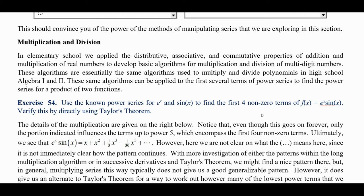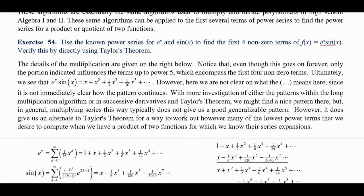These same algorithms can again be applied to find the first several terms of power series for the product of two functions or quotient. So the known power series for e^x and sin(x) can be used to find the first four non-zero terms of e^x times sin(x) for the power series for it. And then we can also use Taylor's theorem directly to verify we did it correctly. So let's work this out.